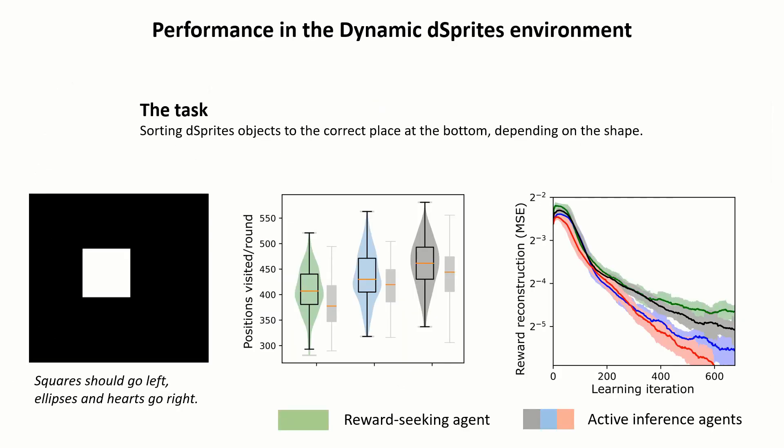We initially tested this agent using an object sorting task based on the well-known Dsprites dataset, where we show that our deep active inference agents explore the given environment more and learn its dynamics more accurately than model-based reward-seeking agents.